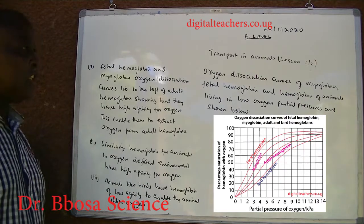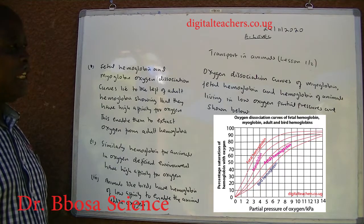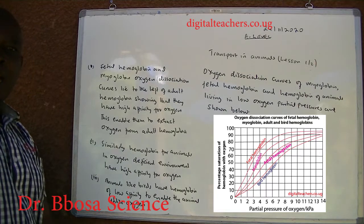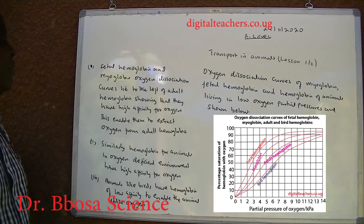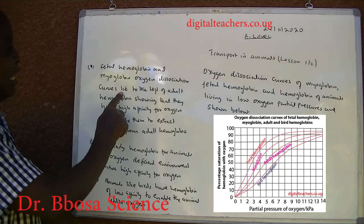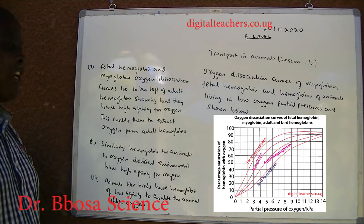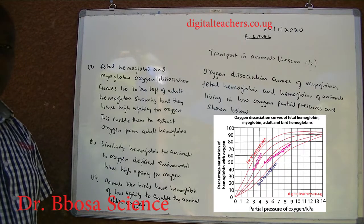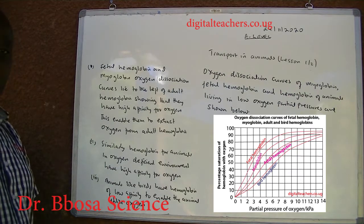Oxygen dissociation curves of myoglobin, fetal hemoglobin and hemoglobin of animals living in low oxygen partial pressures are shown below. The graphs show that fetal hemoglobin and myoglobin oxygen dissociation curves lie to the left of adult hemoglobin, showing that they have higher affinity for oxygen than adult hemoglobin. This enables them to extract oxygen from adult hemoglobin.